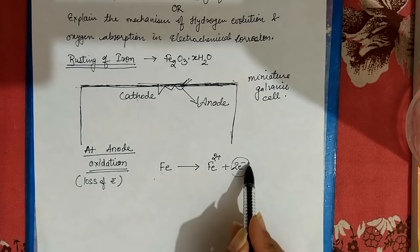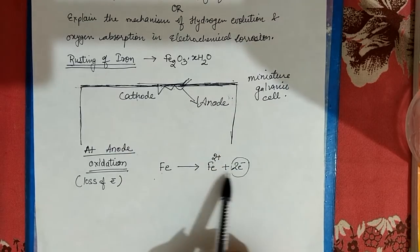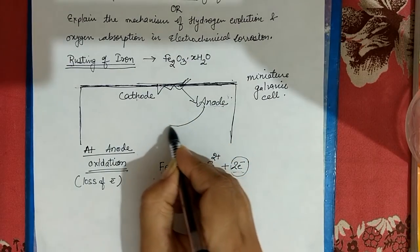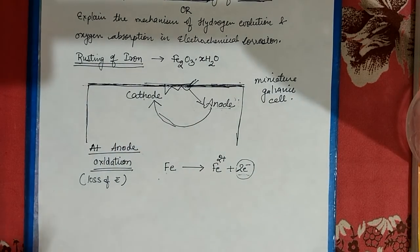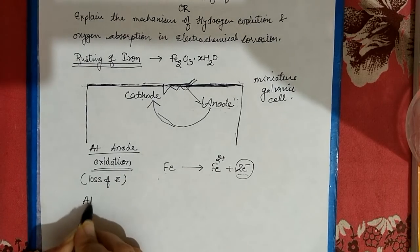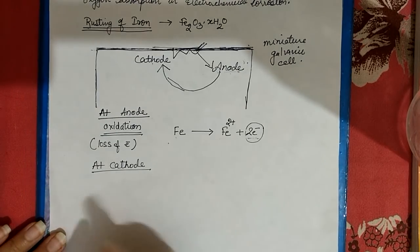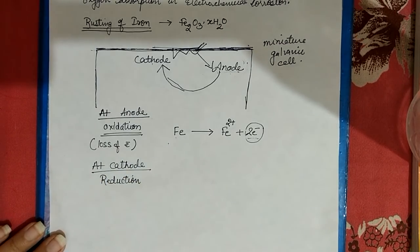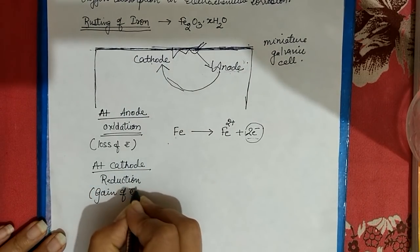The two electrons released at the anode will move to the cathode. At the cathode, reduction will take place. Reduction is the gain of electrons. So at the anode, electrons are lost; at the cathode, electrons are gained.